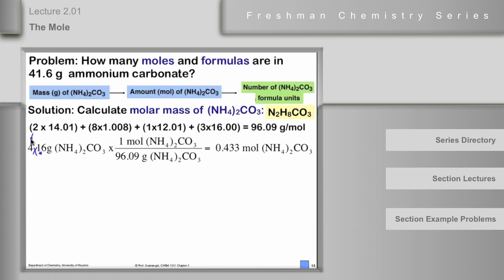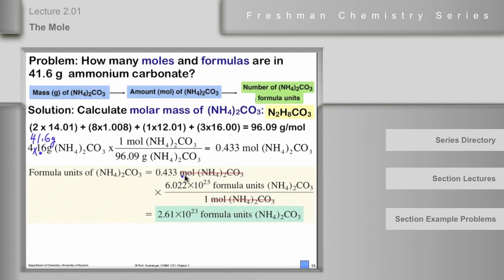Taking 41.6 grams of ammonium carbonate and doing a mass-to-mole conversion: 41.6 grams × (1 mole / 96.09 grams) = 0.433 moles of ammonium carbonate — a little less than half a mole. Then to get formula units, multiply by Avogadro's number: 0.433 moles × 6.02 × 10²³ = 2.61 × 10²³ formula units of ammonium carbonate.